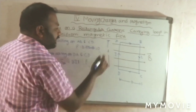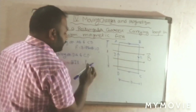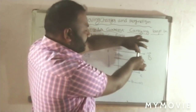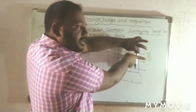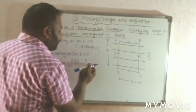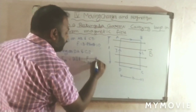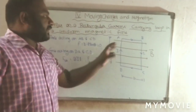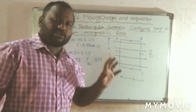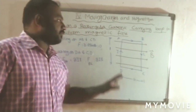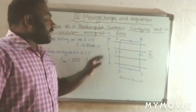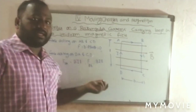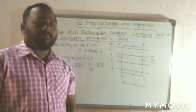So from this, what we understand: the force acting on conductors AB and CD is zero because those two conductors are parallel to the magnetic field. The force acting on conductors AD and BC is BIL because those two are perpendicular to the magnetic field. Now we are going to understand the direction of those forces, which is given by Fleming's left-hand rule.